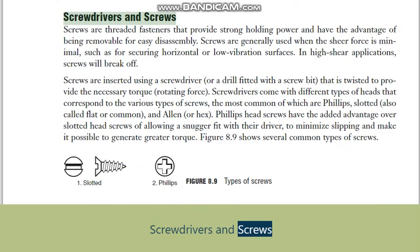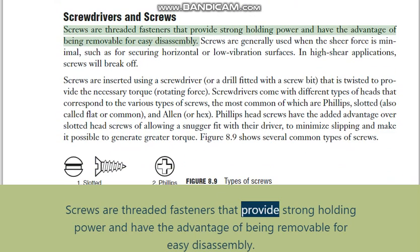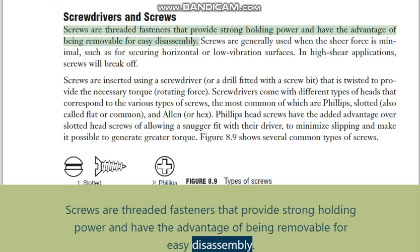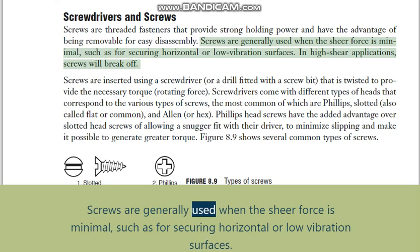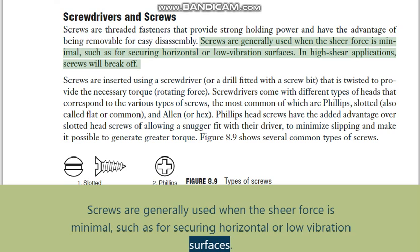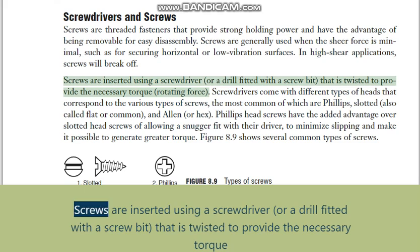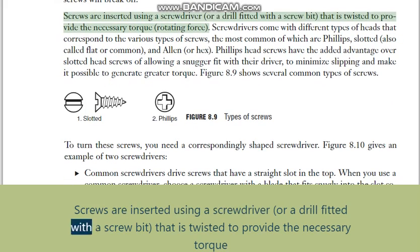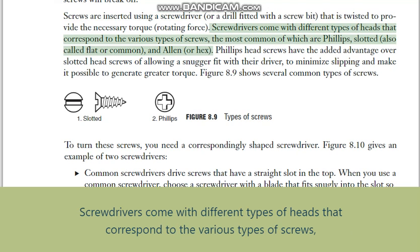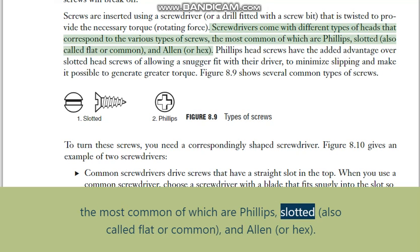Screwdrivers and screws: screws are threaded fasteners that provide strong holding power and have the advantage of being removable for easy disassembly. Screws are generally used when the shear force is minimal, such as for securing horizontal or low-vibration surfaces. In high-shear applications, screws will break off. Screws are inserted using a screwdriver or a drill fitted with a screw bit, twisted to provide the necessary torque.